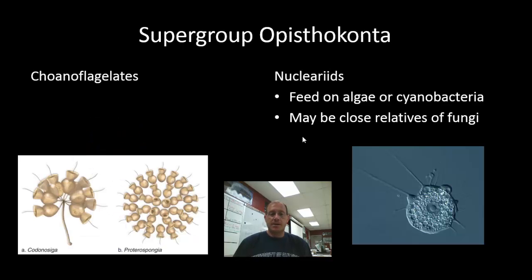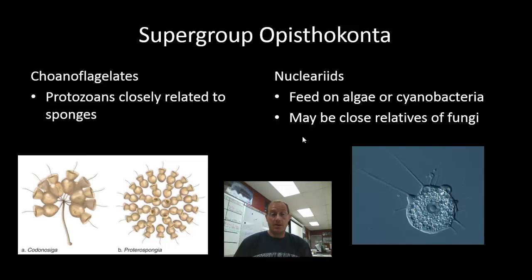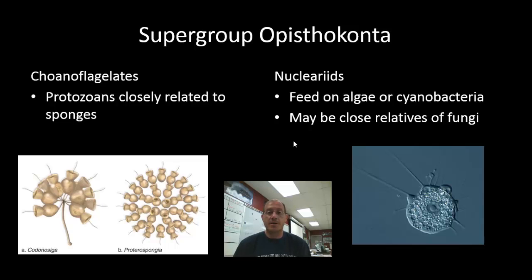The Opisthokonta, which includes the animals and fungi, also includes the choanoflagellates and the nuclearids. Choanoflagellates are protozoa closely related to sponges — in fact they are also filter feeders — and they are both unicellular and colonial. The nuclearids are single-celled organisms that feed on algae or cyanobacteria, and while they lack a characteristic cell wall, molecular similarities suggest they may be close relatives of fungi.